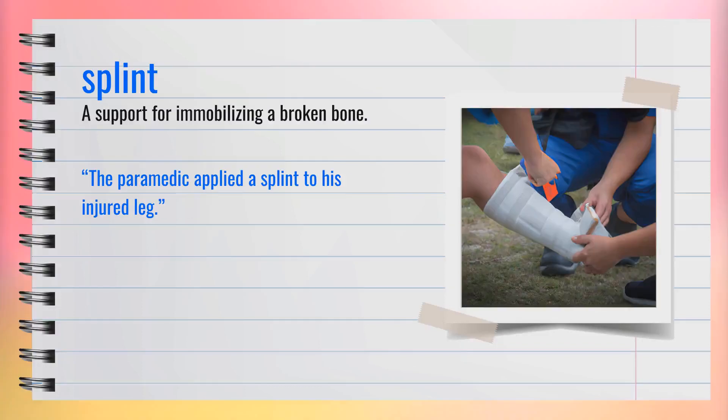The word splint is a noun, spelled S-P-L-I-N-T. It refers to a support for immobilizing a broken bone. Pronounced 'splint.' Another word for splint could be brace. For example, the paramedic applied a splint to his injured leg. A splint is used to keep a broken bone or injured part still.